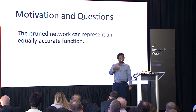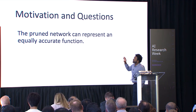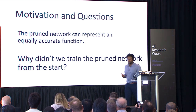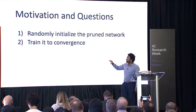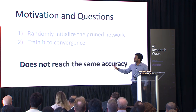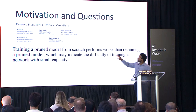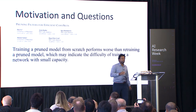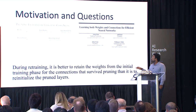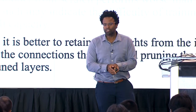The pruned network can represent an equally accurate function, which raises a question: why didn't we just train this pruned network from the start? Why not start with a randomly initialized pruned network and train it to converge — start small, train well? Unfortunately, this does not reach the same accuracy. We've seen time and again that a trained pruned model from scratch performs worse than retraining a pruned model, indicating the difficulty of working with small capacity.